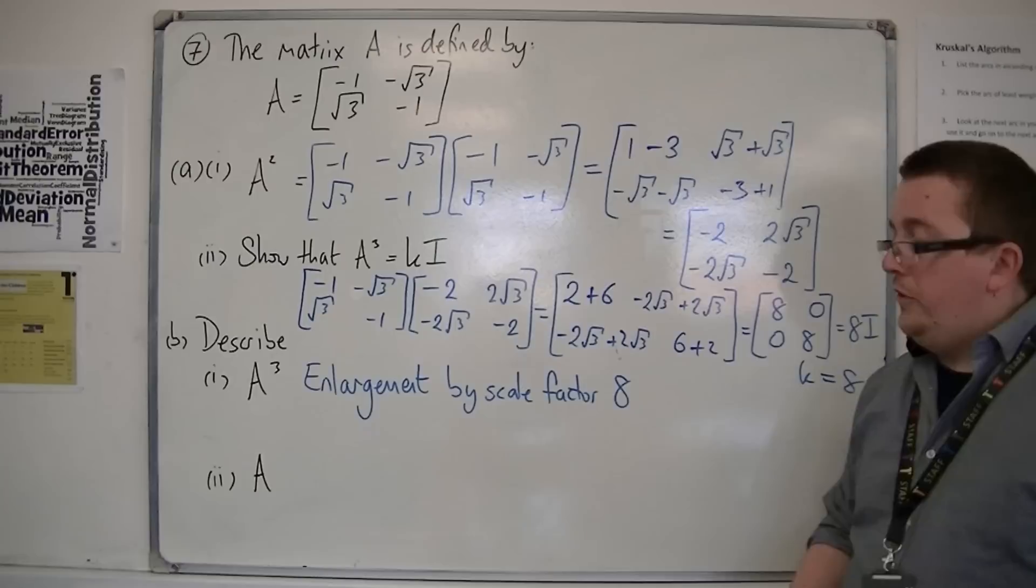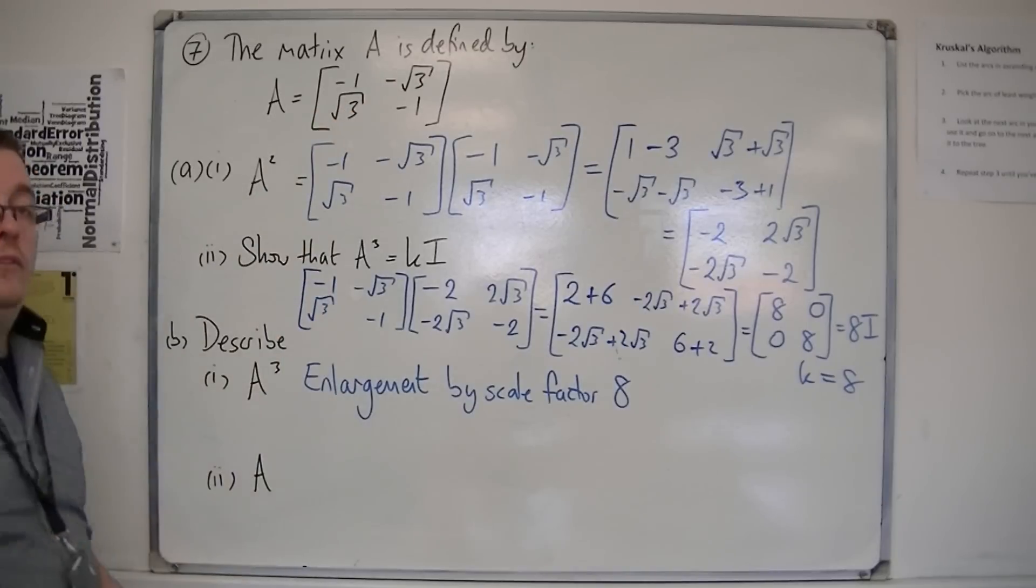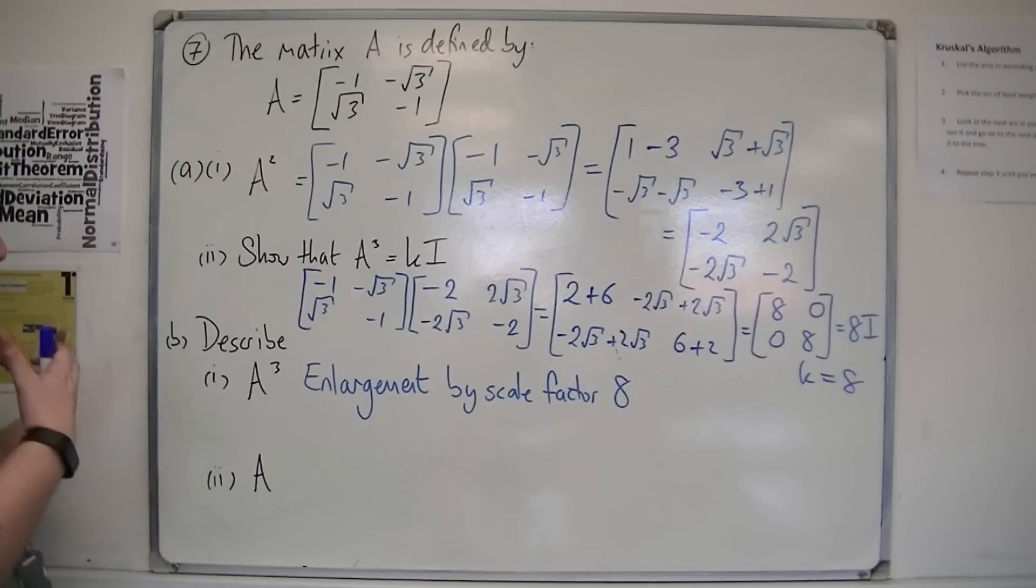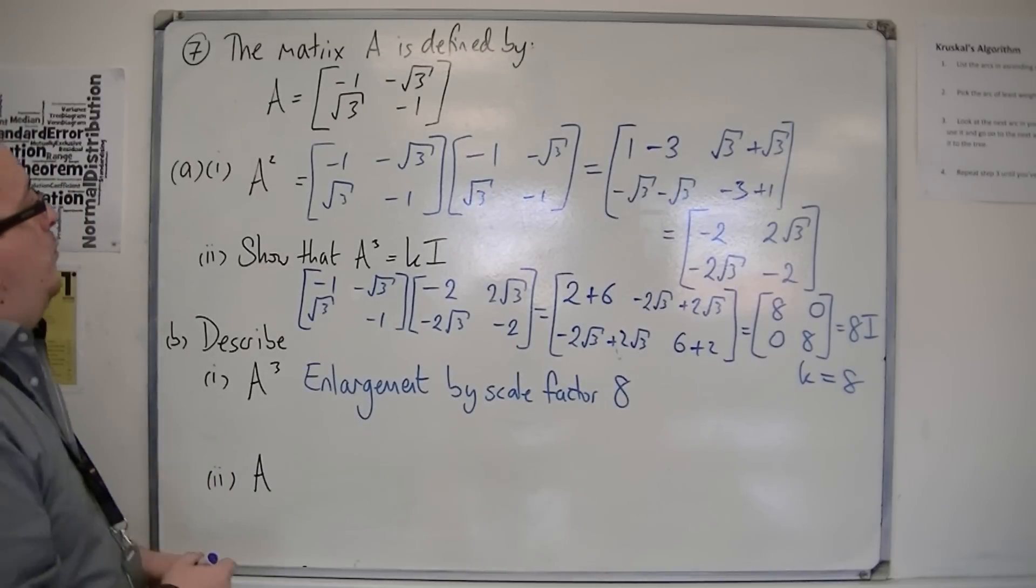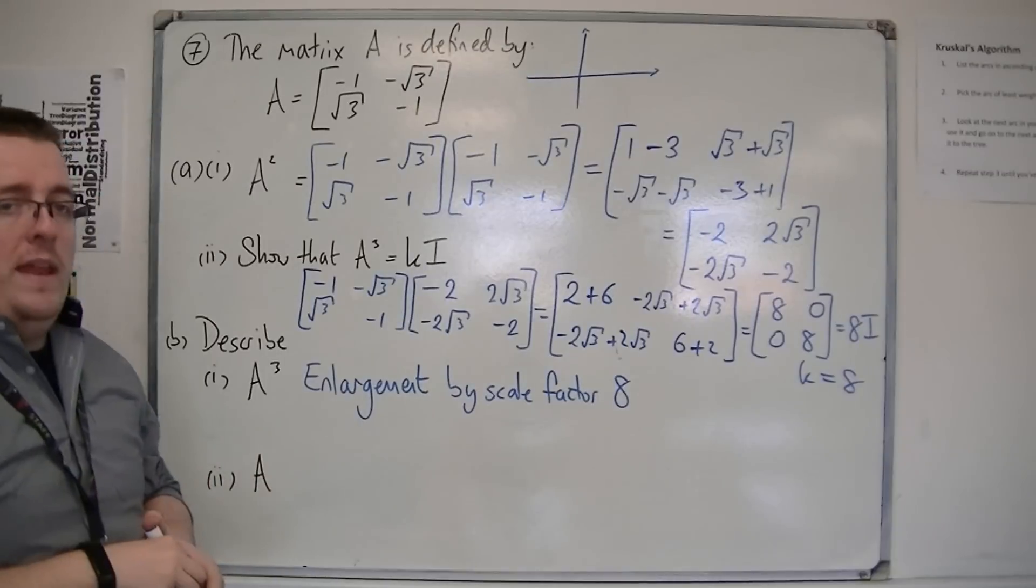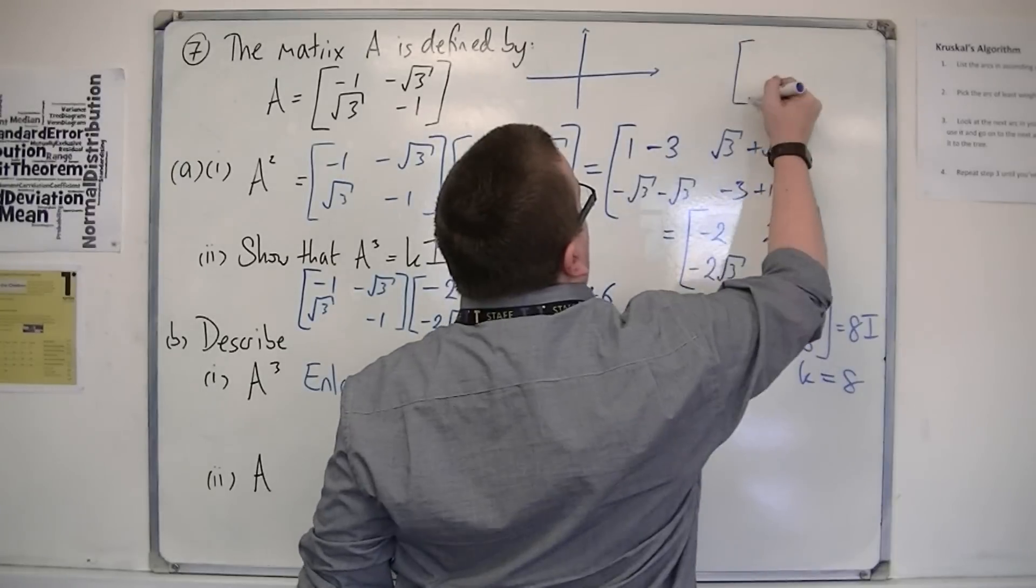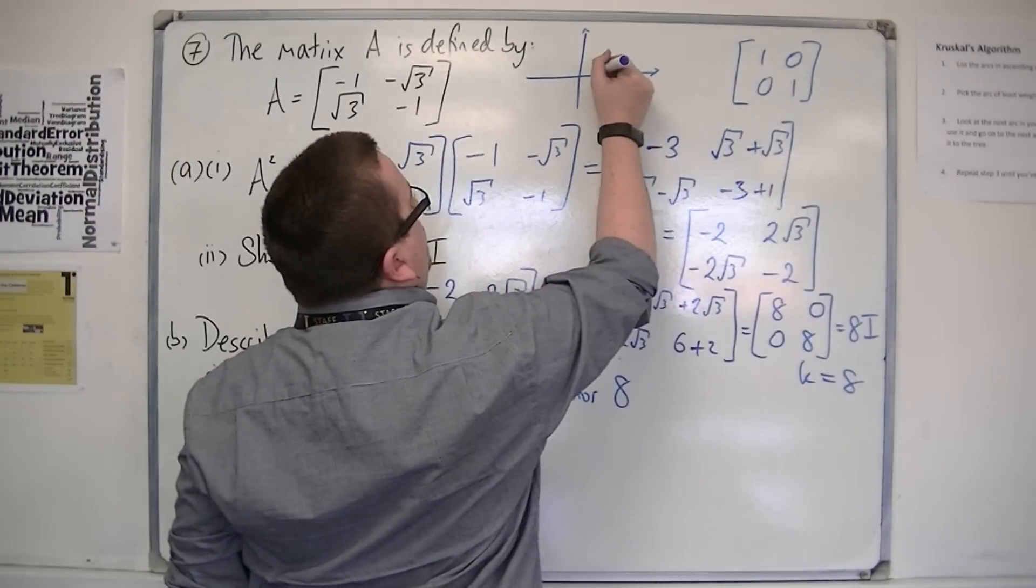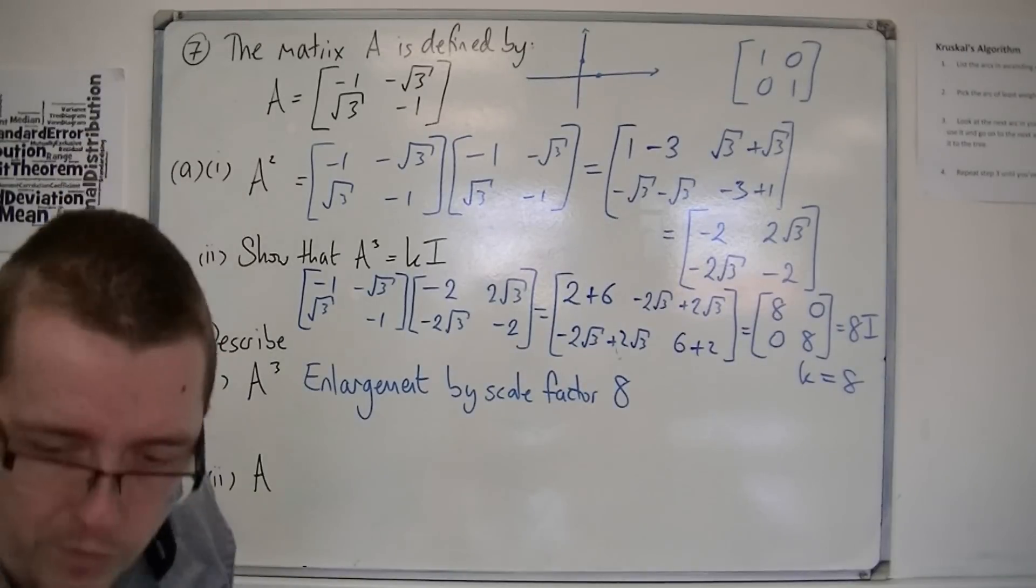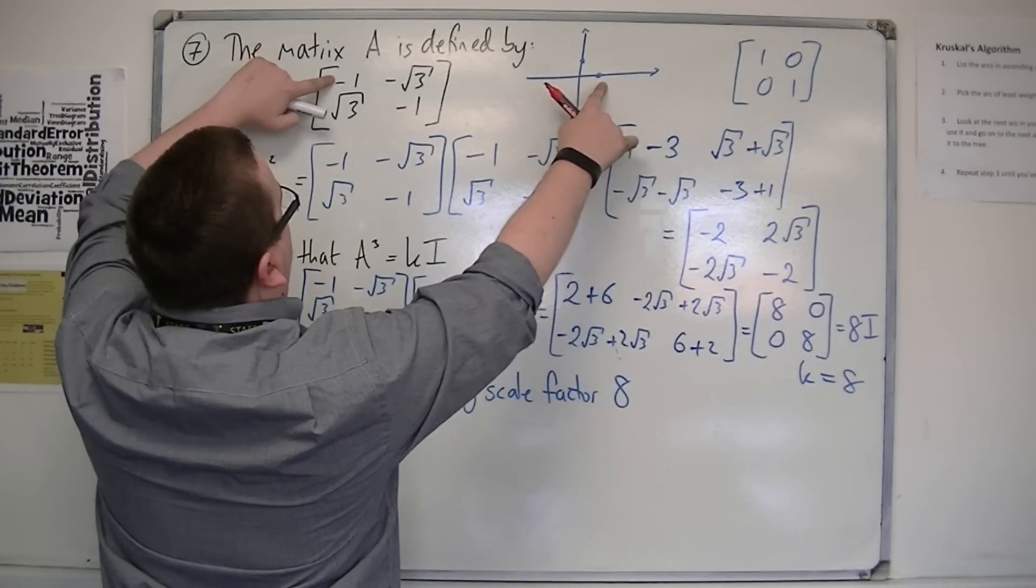Right. Then, we've got to do A. Describe this transformation. So, the actual original transformation. Now, the best way to do this, I find, is to draw the points as they would appear. So, what we've seen here is that if we had our original points, we'd be looking at 1, 0, 0, 1. So, you're looking at the identity matrix, and that gives you the coordinates 1, 0, and 0, 1. Now, let's do this with a red pen. So, 1, 0 has moved to minus 1, root 3, which would be up here.